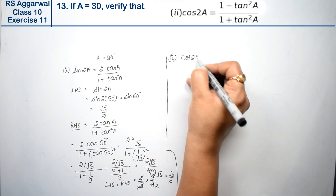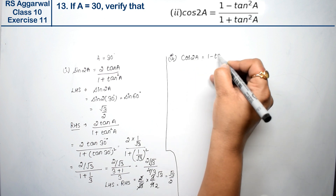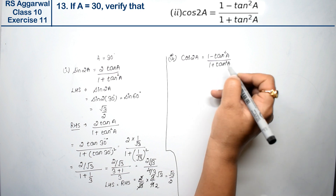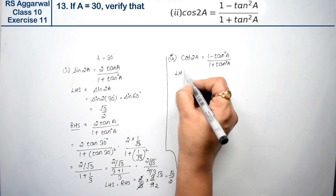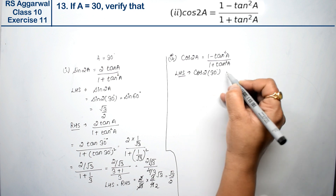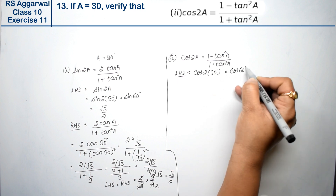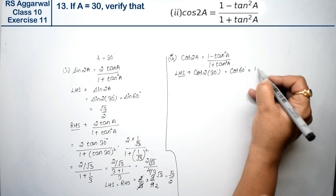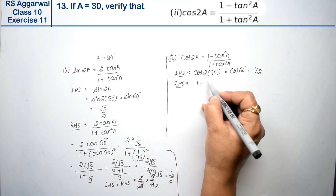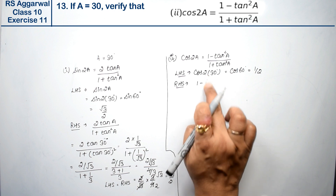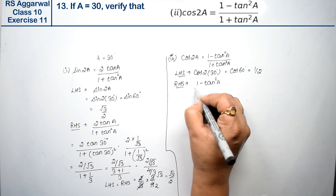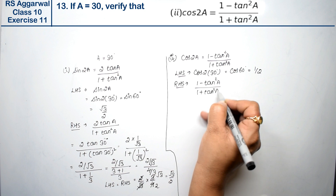Second part says verify that cos 2A equals (1 - tan²A) upon (1 + tan²A). So we take the left hand side: cos 2A with A = 30° becomes cos 60°. And cos 60° equals 1/2. Now let's look at the right hand side: (1 - tan²A) upon (1 + tan²A).